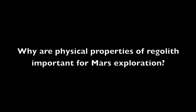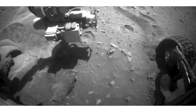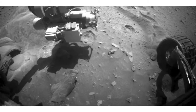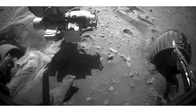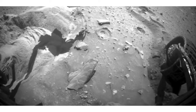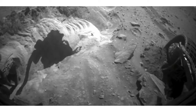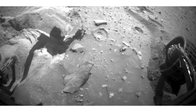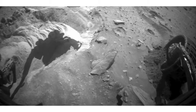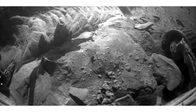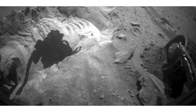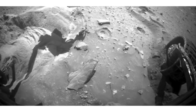Why are physical properties of regolith important for Mars exploration? On May 1st, 2009, Spirit became stuck in cohesionless soil. Despite attempts to free the rover, NASA announced seven months later, in January of 2010, that it was effectively immobilized but would continue to function as a stationary research platform. In order to prevent future mission failures, we must test the soil for properties such as cohesion and friction angle.